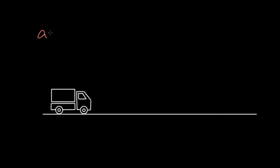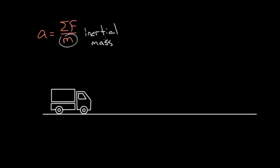This idea of inertial mass is best exemplified with Newton's second law: acceleration equals the net force divided by m. This m in the denominator is the inertial mass, because it's telling you how reluctant that thing is to being accelerated. More inertial mass would give you less acceleration.